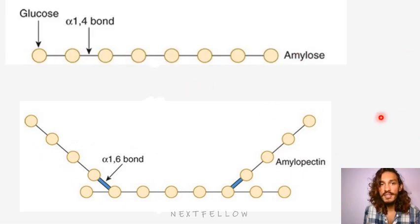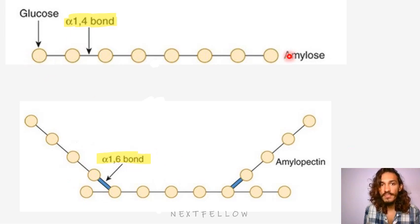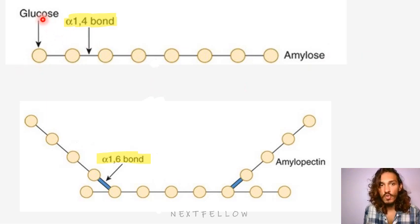What you see here is: over here you can see alpha-1,4 bonds and over here you can see alpha-1,6 bonds. So this is straight — glucose is there and that is straight. So, amylose is a polysaccharide containing glucose with alpha-1,4 bonds which is straight, no branching. But in amylopectin, you see alpha-1,6 bonds which has branching.